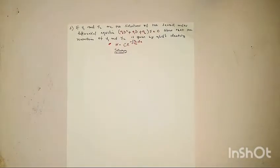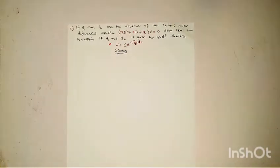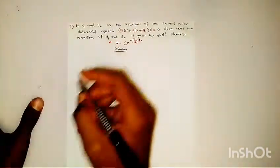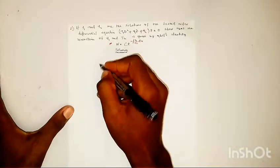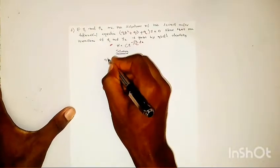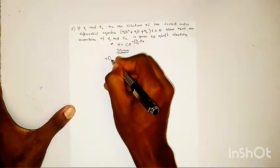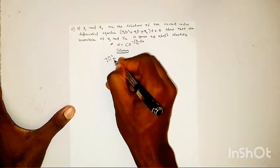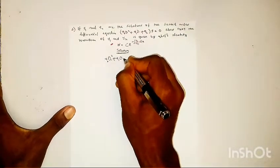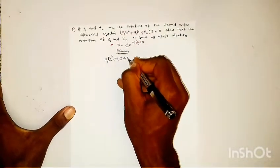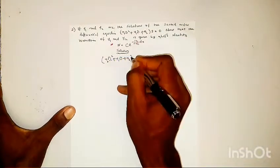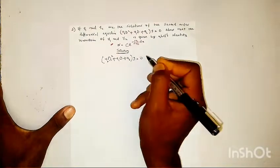So now let's proceed to proving Abel's identity. We are given the general second order standard equation, written as a0 D-squared plus a1 D plus a2, in brackets, times y, equals zero.